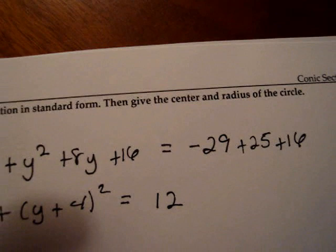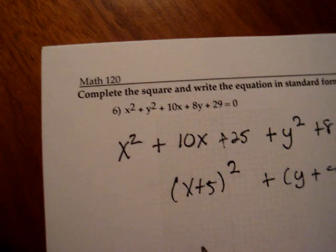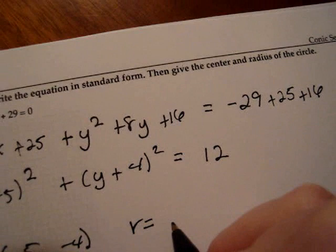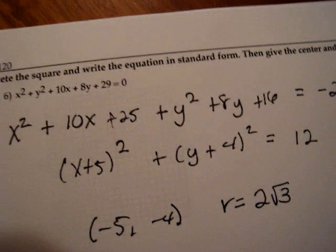Now, we're asked to then give the center and radius of this circle. So the center will be at, be careful, negative 5, negative 4. And the radius, again, will be the square root of 12, which simplifies to 2 root 3. Okay.